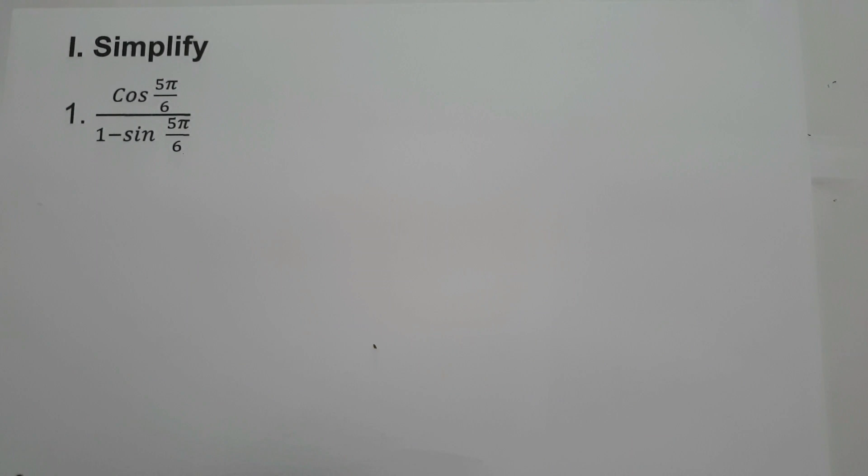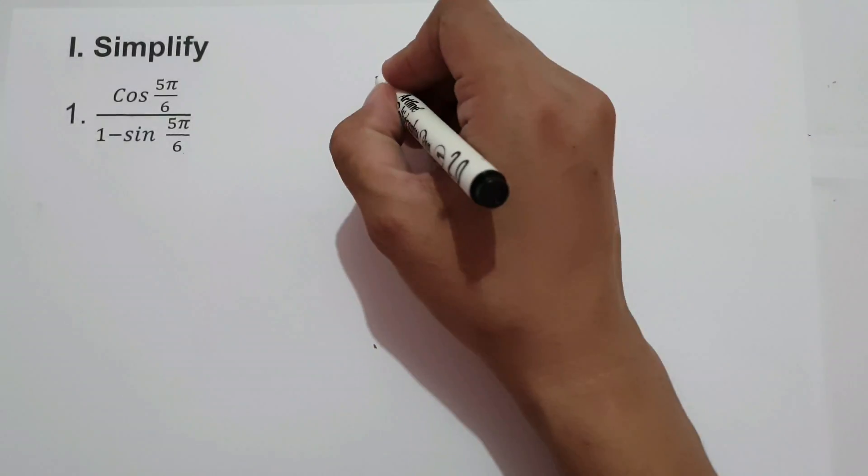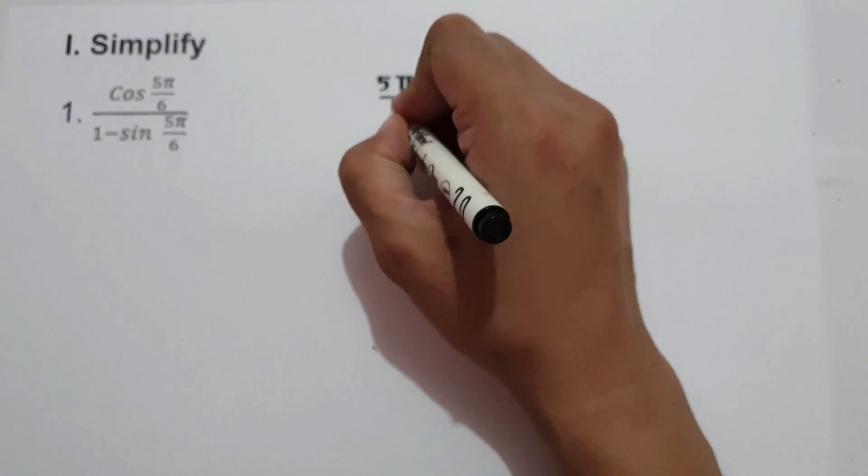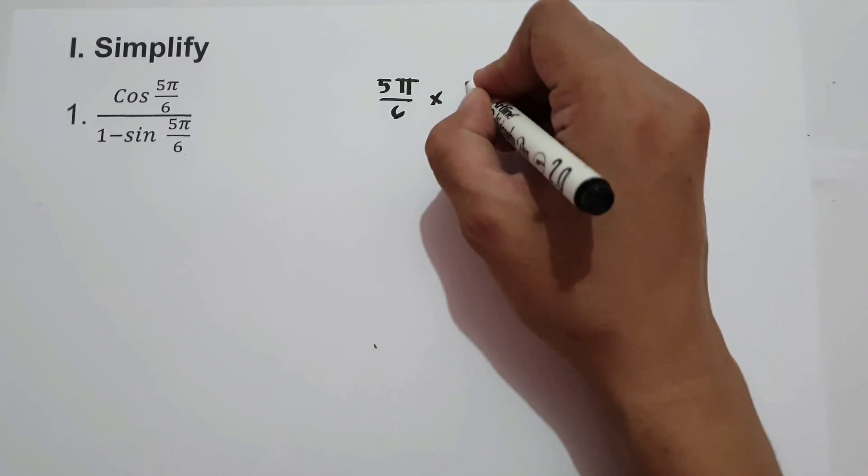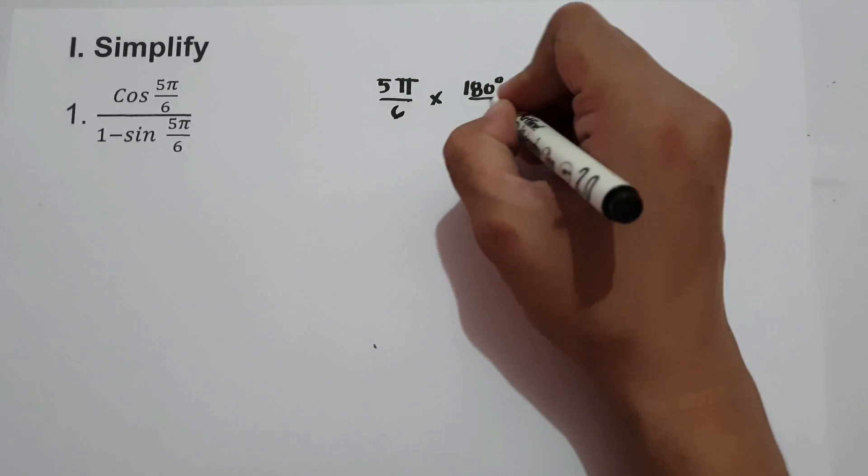In order to simplify the given expression, let us first convert the given radians to degrees and use the reference angle to find the exact value of the trigonometric expression. So let's have 5π/6 and multiply by 180 degrees over π to convert into degrees.